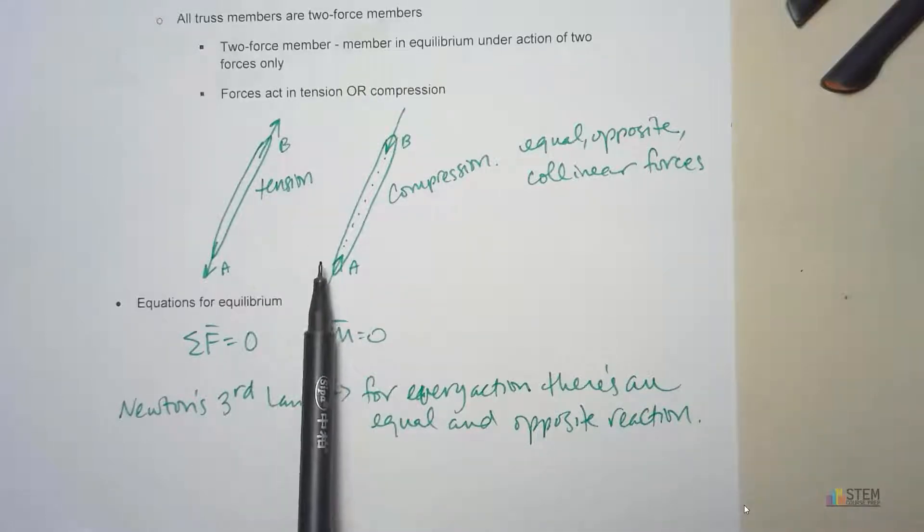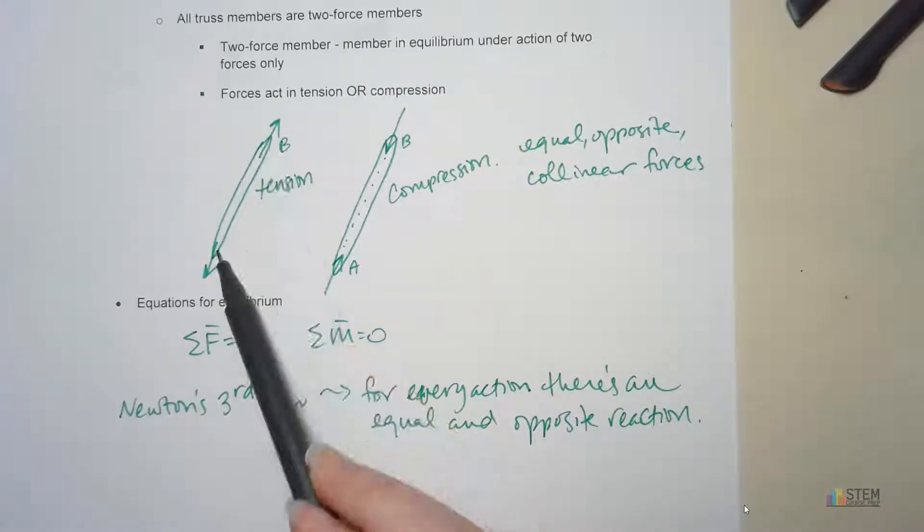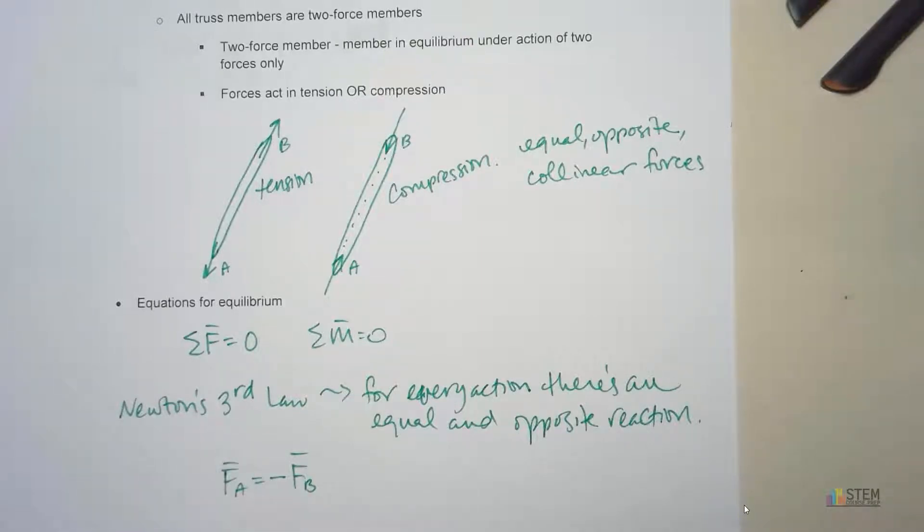So we're going to keep this in mind as we go through these problems. Now look at these two things. If you think about it, Newton's third law here, we're going to have that in place. So look at this. These are equal but opposite in direction, right? So we can say that FA is equal to negative FB. So just keep this in mind. We're going to revisit this when we go through our trusses.